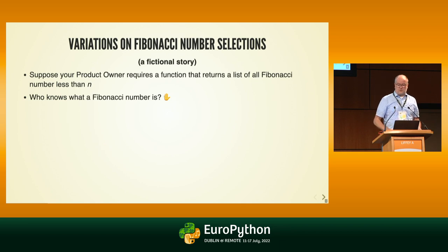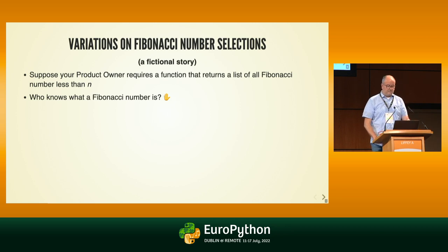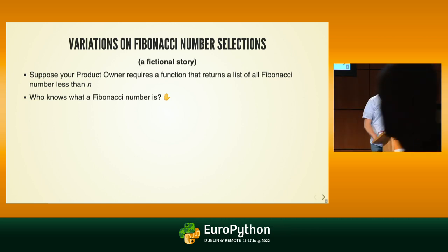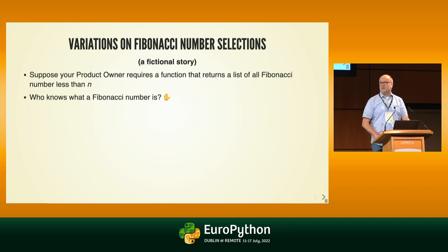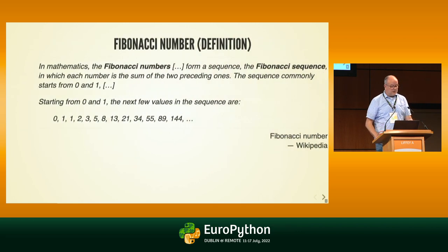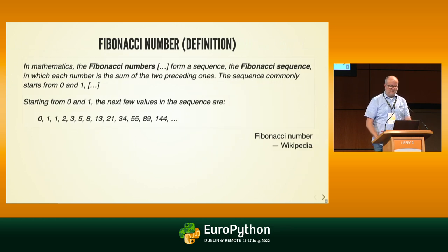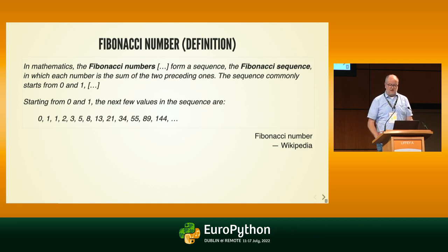I'm going to tell you a fictional story about a Python team developing functionality for a product owner representing the Fibonacci sequence fan club. The product owner wants a function returning a list of all Fibonacci numbers less than a certain threshold, say n. The Fibonacci sequence is defined in Wikipedia as: each number is the sum of the two preceding ones. You start with zero and one — there is some debate about the starting values, but let's use these.